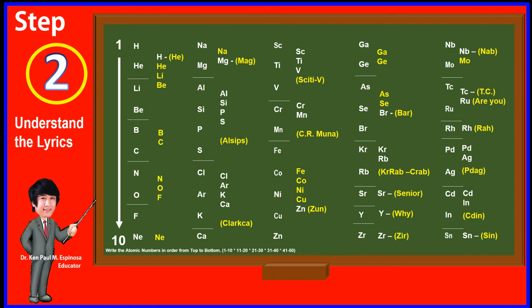Step 2: Understand the lyrics. He, he, li, bi, bi, si, nof, ne. Then write the atomic numbers in order from top to bottom, 1 to 10.